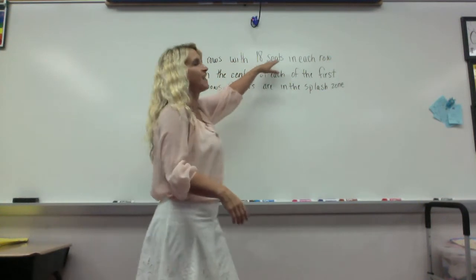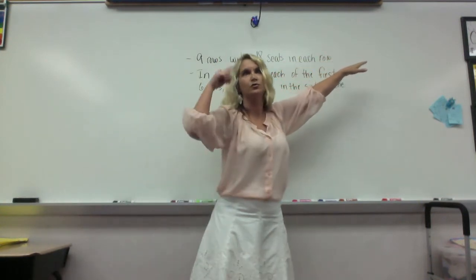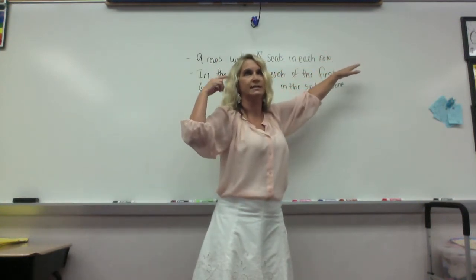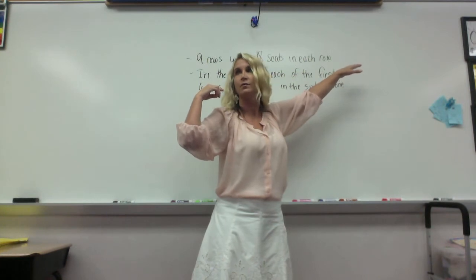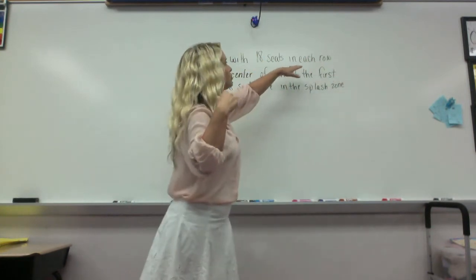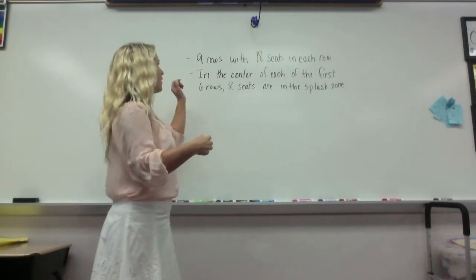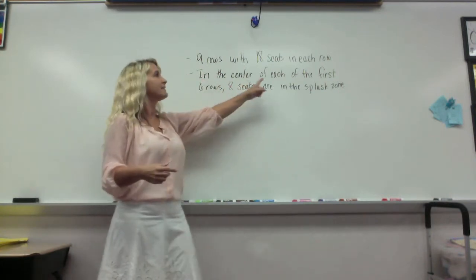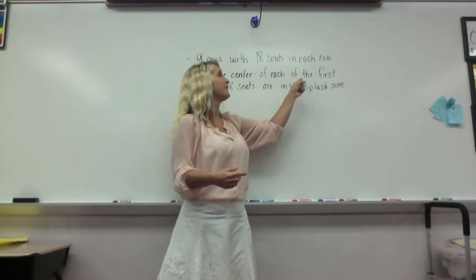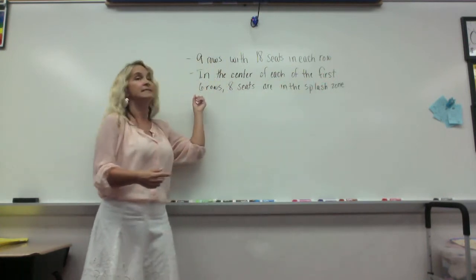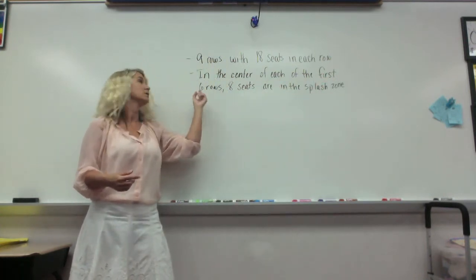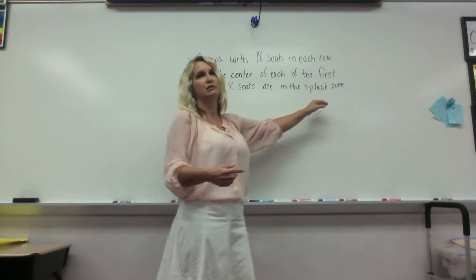So nine rows with 18 seats in each row. I'm sure that you guys are starting to visualize this, even those of you that are playing already. You're trying to visualize nine rows with 18 seats in each row. In the center of each of the first six rows, eight seats are in the splash zone.